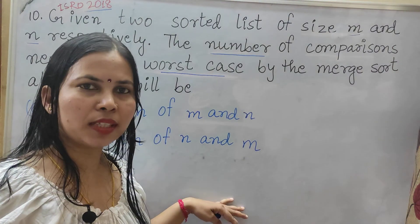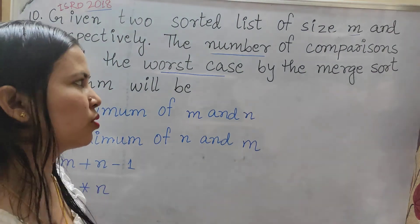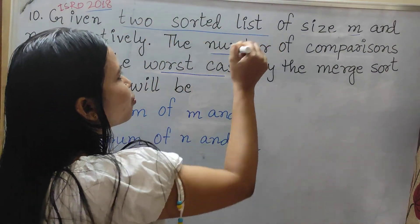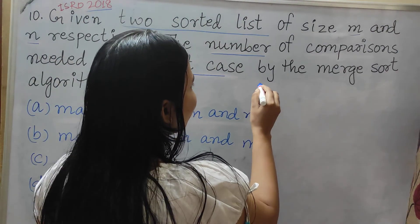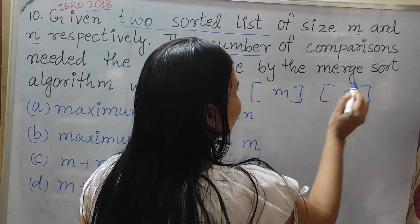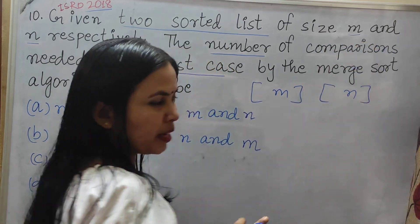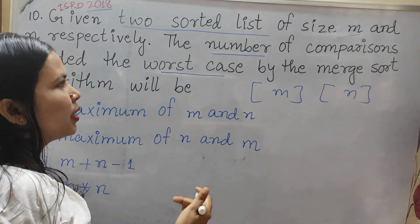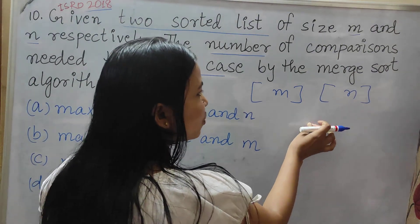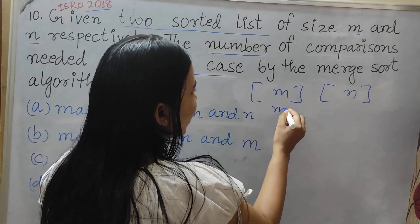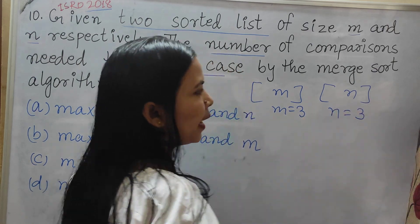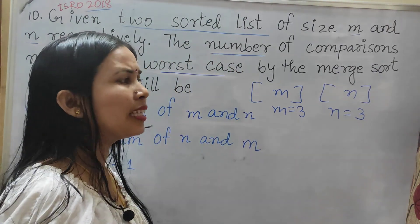I am showing you through examples which one is the correct answer. Two sorted arrays are given — first of size M and another of size N. Suppose I am taking M equal to 3 elements and N equal to 3 elements also. I am taking short examples.